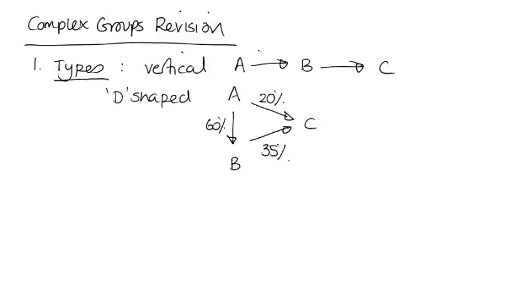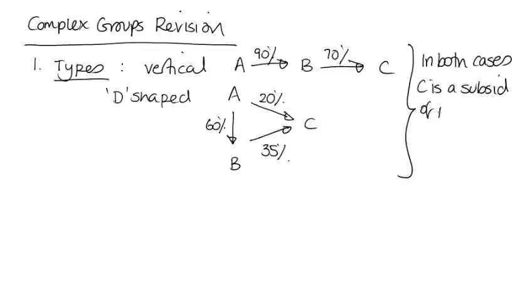And let's say in this first one I've got 90% and 70%. We would say here in both cases, C is a subsidiary of A because A controls a majority of C's shares.